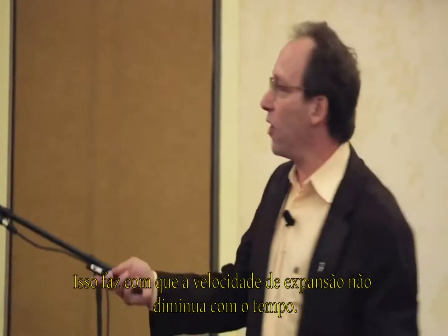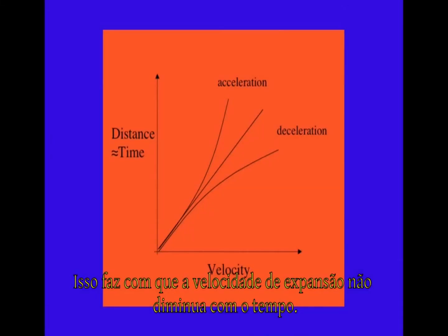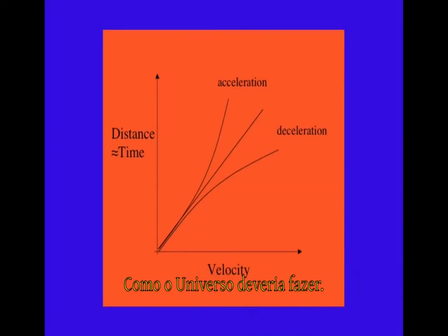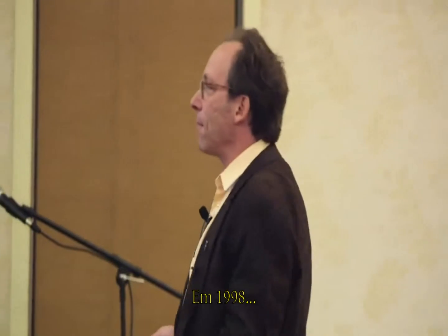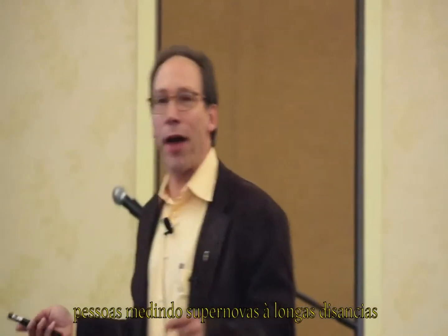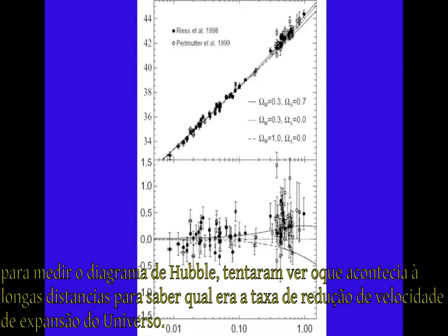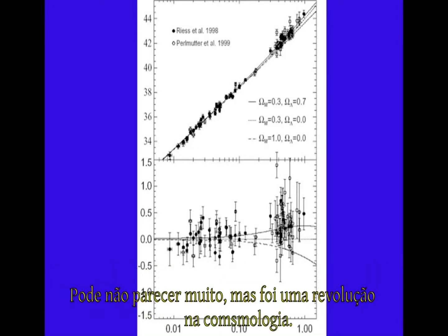It would produce a cosmological constant. That would cause the expansion of the universe not to slow down over time, as any sensible universe should do, but to speed up over time. In 1998, people measuring supernovae at large distances to measure the Hubble diagram tried to see what was happening at large distances — to see if the universe was slowing. They all knew the universe was slowing down; they wanted to measure how much. This doesn't look like much, but it was a revolution in cosmology.